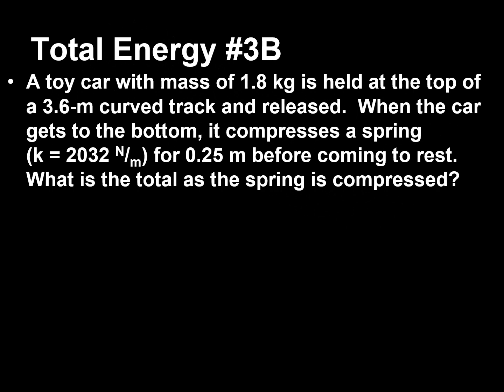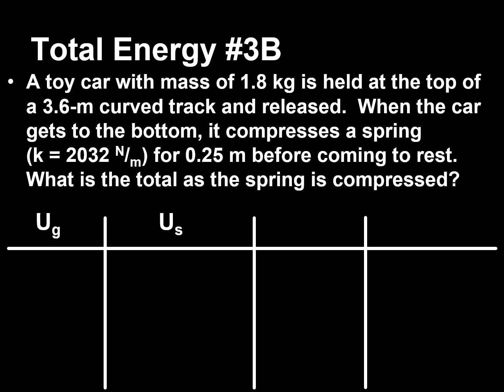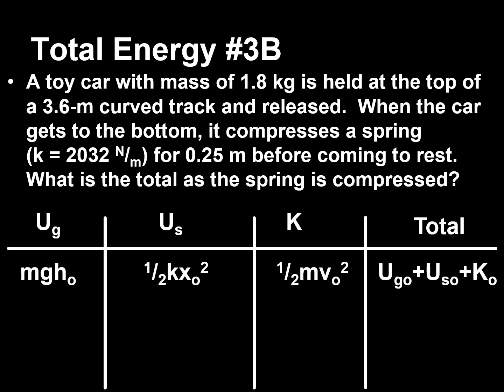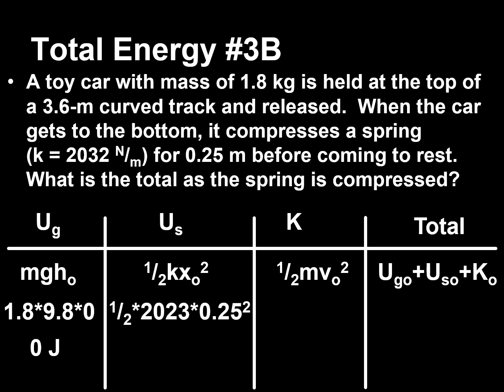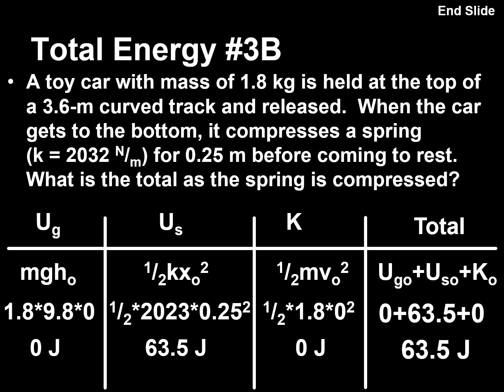At the bottom, where the spring is compressed: gravitational potential energy = 0 (at zero height). Spring potential energy = ½ × 2,032 × 0.25² = 63.5 joules. Kinetic energy = 0 (comes to rest). Total energy at the bottom = 63.5 joules. This shows the gravitational potential energy from the top is fully converted to spring potential energy at the bottom — the total remains the same.